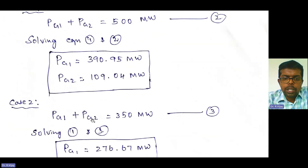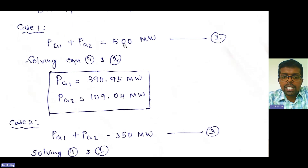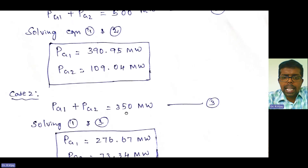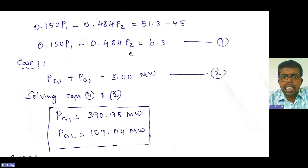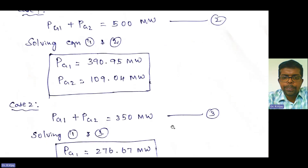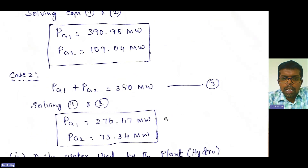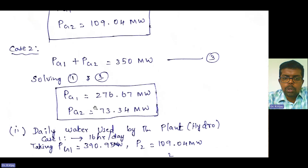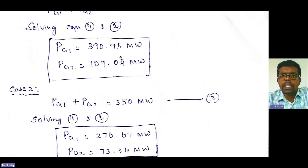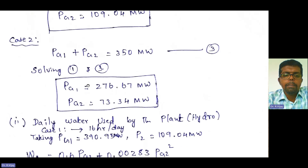Case 2: PG1 + PG2 = 350 megawatt. The first operating cycle is 500 megawatt and the second is 350 megawatt. Taking Equation 1 and this as Equation 3 and solving, we get PG1 = 276.67 megawatt and PG2 = 73.34 megawatt. So for both demands, PG1 and PG2 have been calculated.